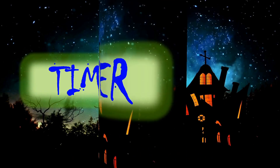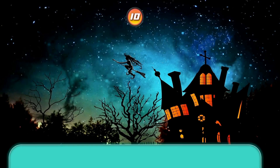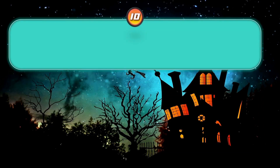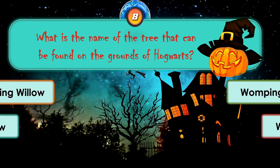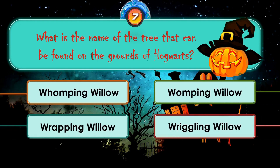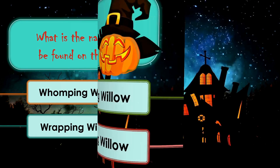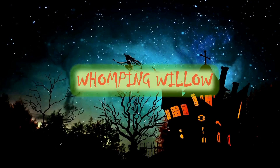Moving to next question: what is the name of the tree that can be found on the grounds of Hogwarts? Hoomping Willow, Wimping Willow, Wrapping Willow, Wrigling Willow. The correct answer is Hoomping Willow.